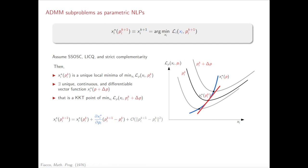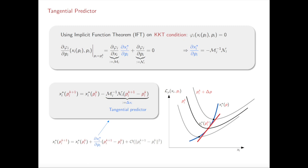Now we can linearize the solution manifold around the current iterate, where if we can compute the sensitivity, which is given by the partial x by partial p, we can then cheaply approximate the solution to the new parameter value. Using implicit function theorem on the KKT matrix, sensitivities can be obtained by solving a system of linear equations, which is the tangential predictor.